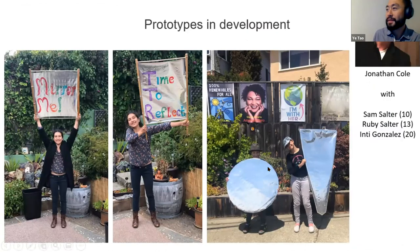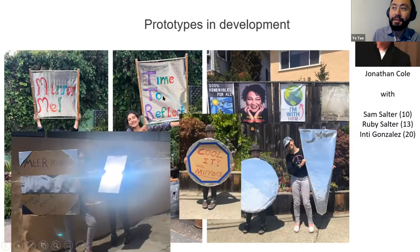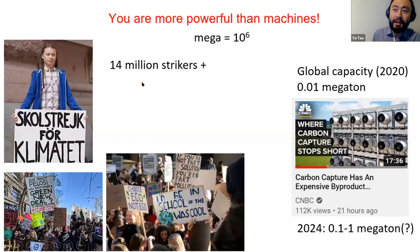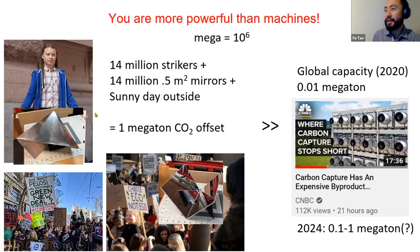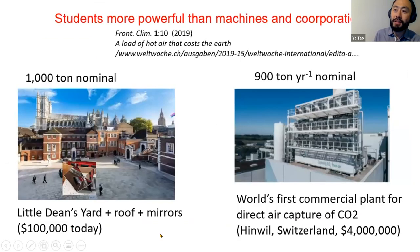We have also started to prototype DIY projects for Fridays for Future strikers. We think that if all of them carried a half meter squared mirror on their day of protest, they could together offset one megaton of CO2, which is a couple orders of magnitude larger than current global capacity by industrial means. In fact, it's much cheaper to achieve offsetting using mirrors rather than construct a very expensive power plant.